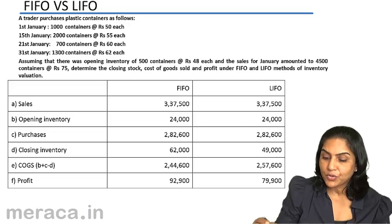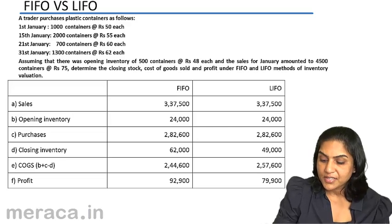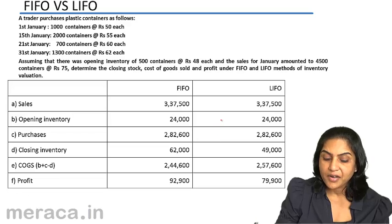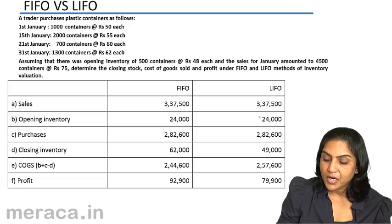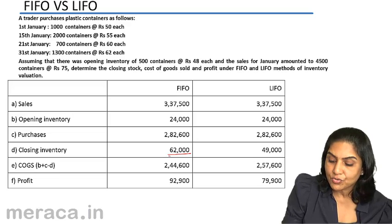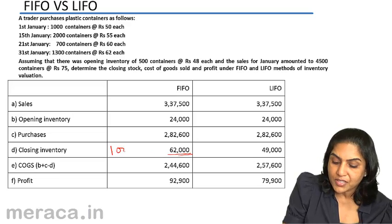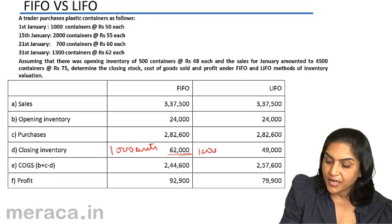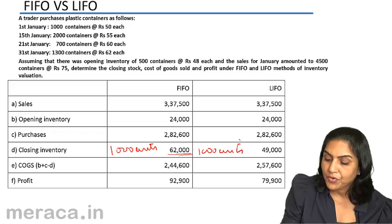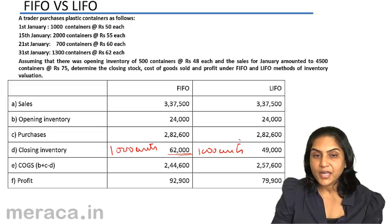The sales, opening inventory, and purchases are the same under both methods. However, closing inventory under FIFO is 62,000, though in both cases we are talking of 1,000 units, and under LIFO the closing stock is 49,000.